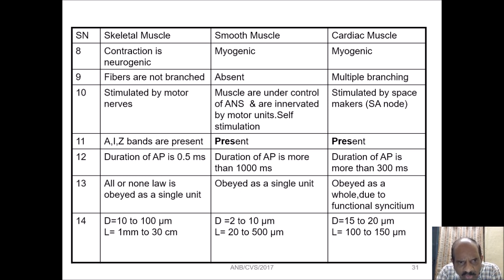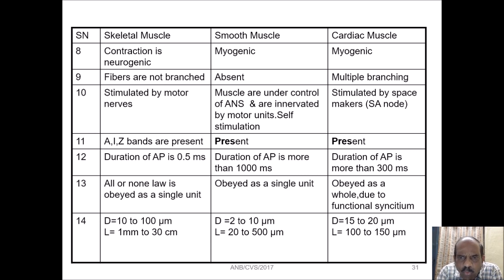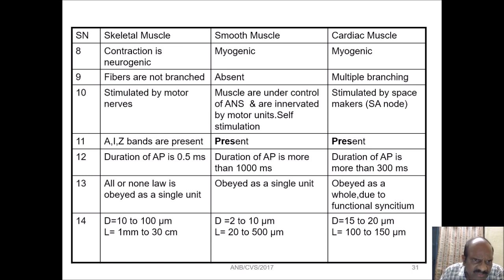Skeletal muscle follows the all-or-none law as a single unit. Smooth muscle also obeys the all-or-none law as a single unit. However, in cardiac muscle the all-or-none property is obeyed as a whole — the entire cardiac muscle structure contracts synchronously at once due to functional connectivity.